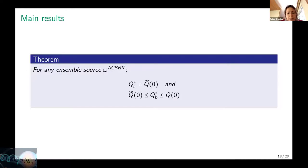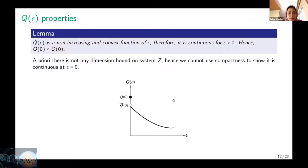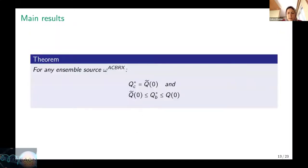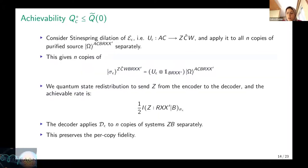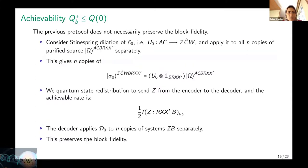The main result is that considering per-copy fidelity, the optimal compression rate is equal to the limit of the function at zero, q̃(0). When we consider block fidelity, we find lower and upper bounds on the optimal rate: the lower bound is this limit of the function, and the upper bound is the value of the function at zero. So if we could prove that the function is continuous at ε = 0, we could show that block fidelity and per-copy fidelity give the same compression rate. Due to time constraints, I'll skip the proof of achievability and converse bounds.